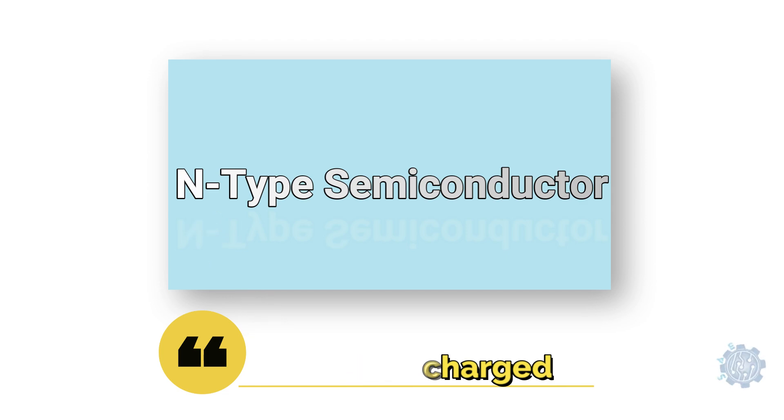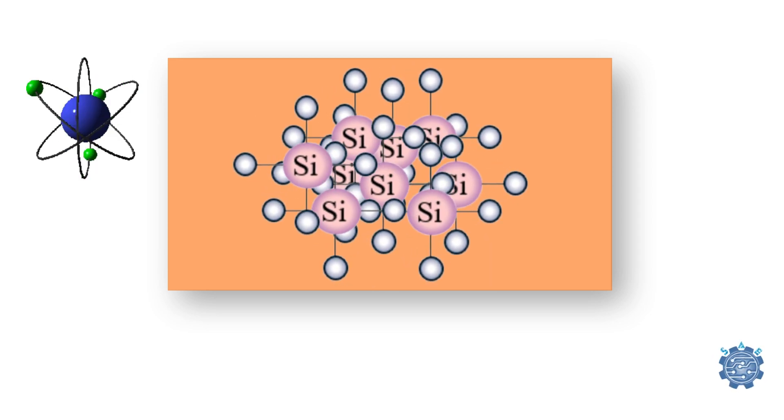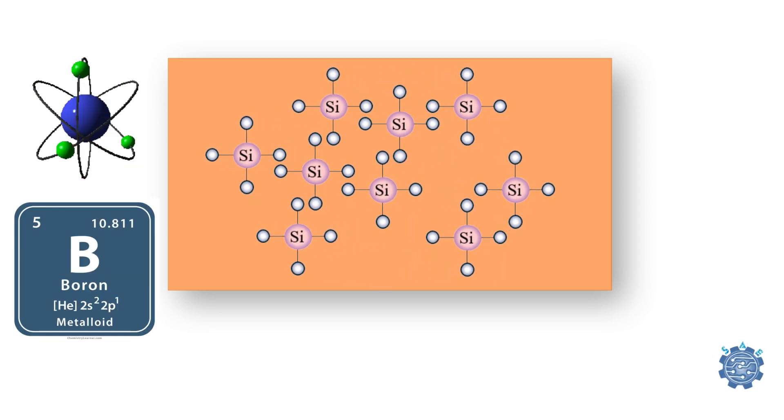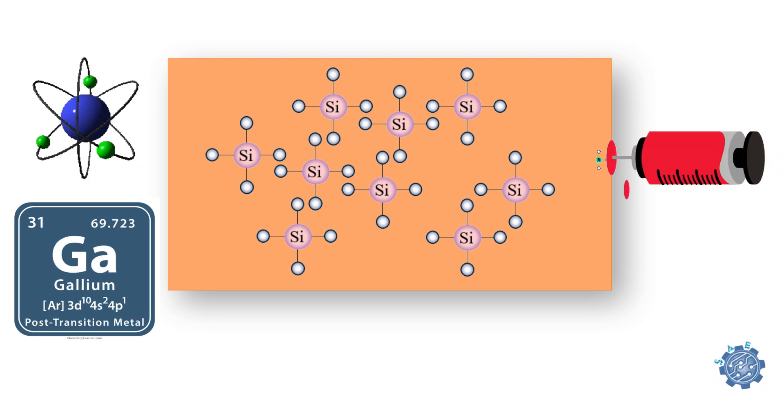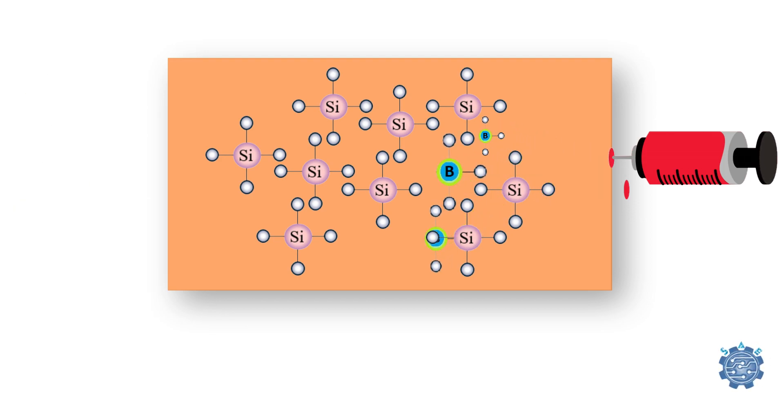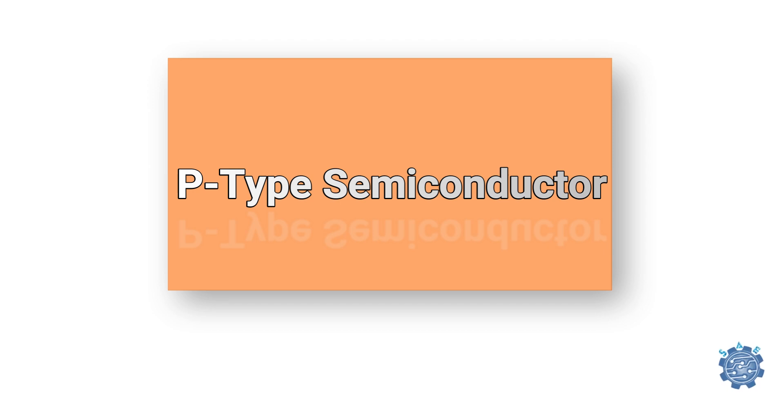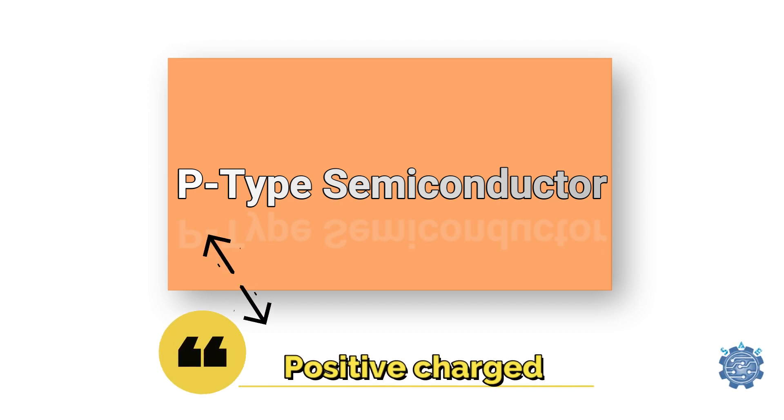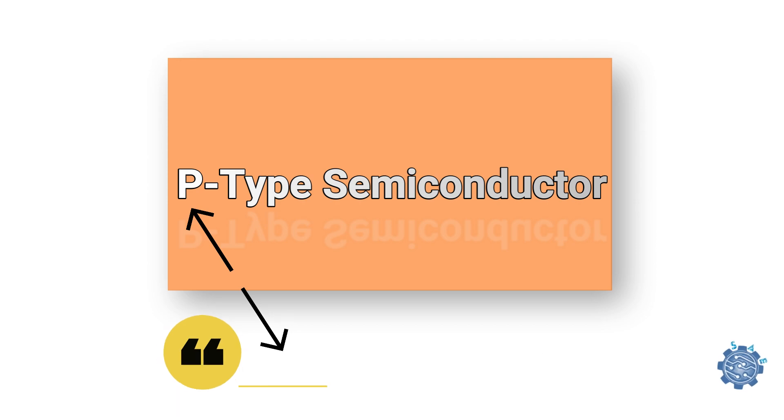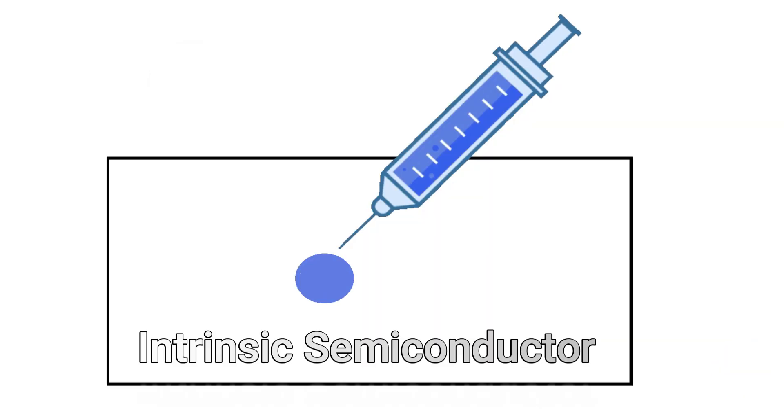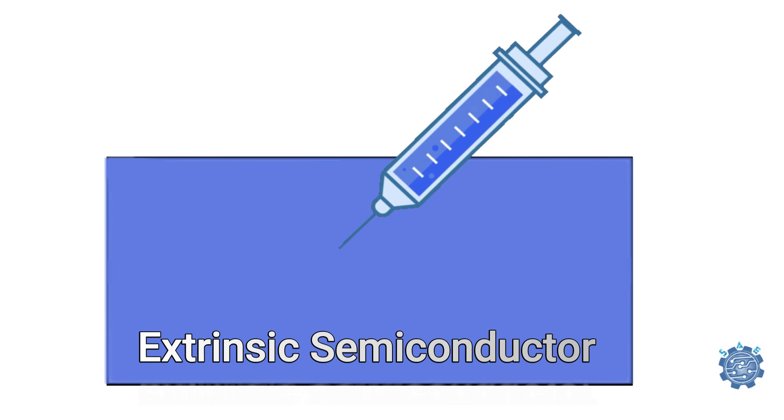In order for an intrinsic semiconductor to have more holes, they are doped with trivalent impurity atoms, such as boron, indium and gallium. By adding more trivalent material atoms, it increases the number of holes and increases the conductivity. This type of semiconductor is a P-type semiconductor because it has more positive charge carriers. The doping process converts intrinsic semiconductors into extrinsic semiconductors.